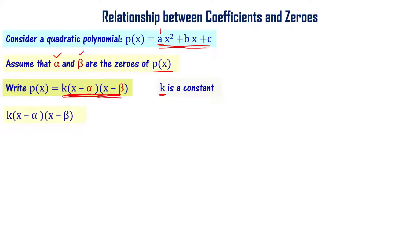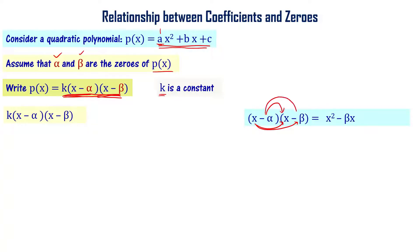We write p of x equal to k times x minus alpha times x minus beta, where k is a constant. Expanding x minus alpha times x minus beta gives x square minus beta x minus alpha x plus alpha beta, which equals x square minus alpha plus beta times x plus alpha beta.